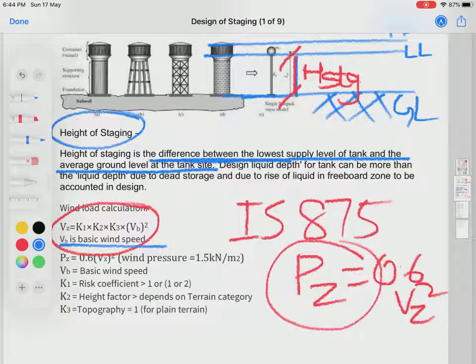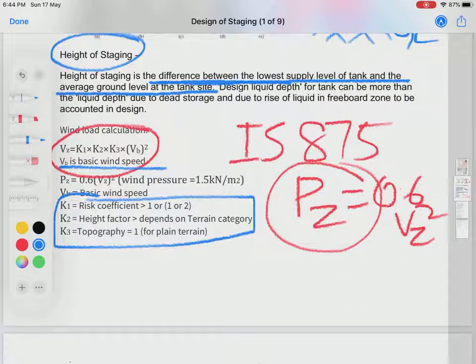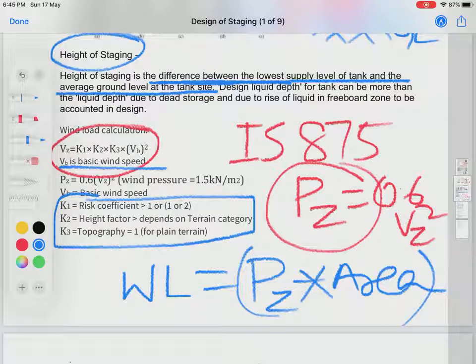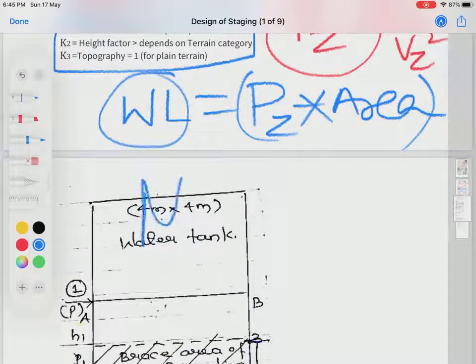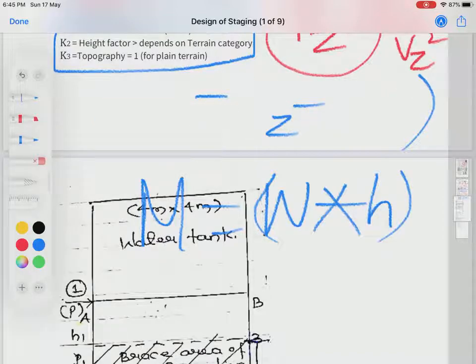Design wind speed is obtained by Vz = K1 × K2 × K3 × Vb². What is Vb? Vb is basic wind speed. K1, K2, K3 are coefficients: K1 is risk coefficient (1 or 2), K2 is height factor depending on terrain category, K3 is topography (1 for plain terrain). These constants are given in the problem. Vb is given in a table where the complete map of India is divided into different wind speed zones, just like earthquake zones.